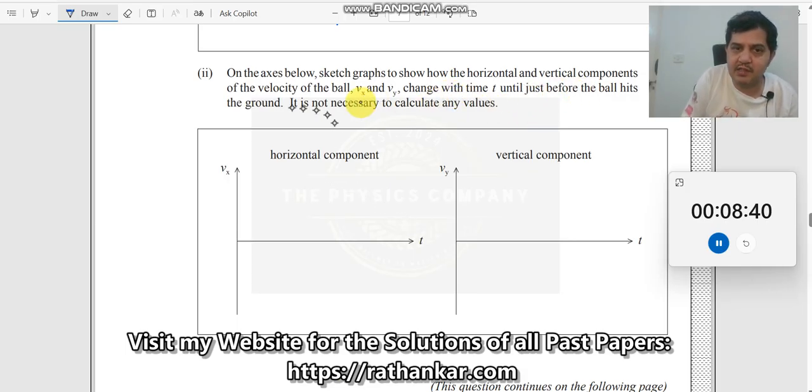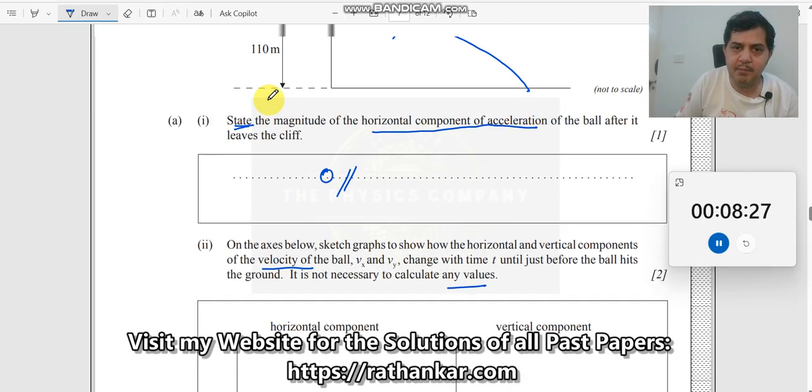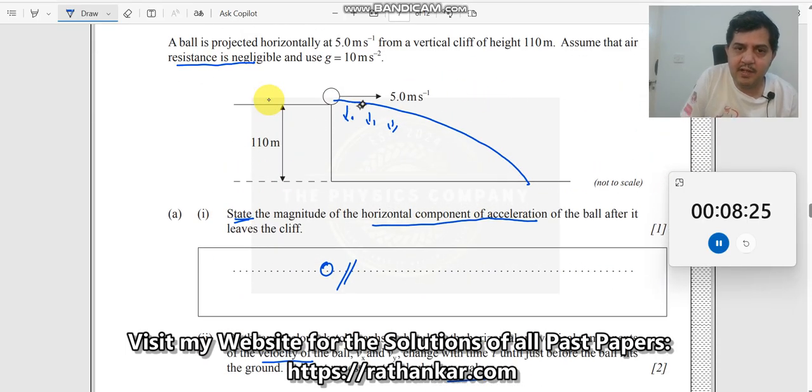On the axes below, sketch graphs to show how the horizontal and vertical components of velocity of the ball change with time until just before the ball hits the ground. Remember, he's talking about velocity, not horizontal component of acceleration. What happens when the ball is moving? The horizontal component of velocity remains the same, it doesn't change at all.